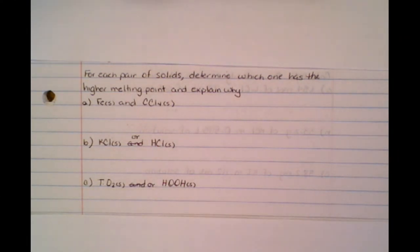Remember when we're looking at which one has a higher melting point, we're looking at the kind of bonds that they actually have. So we need to think, are we talking about an ionic bond, a molecular bond, a metallic bond, and what is the order of those strengths?